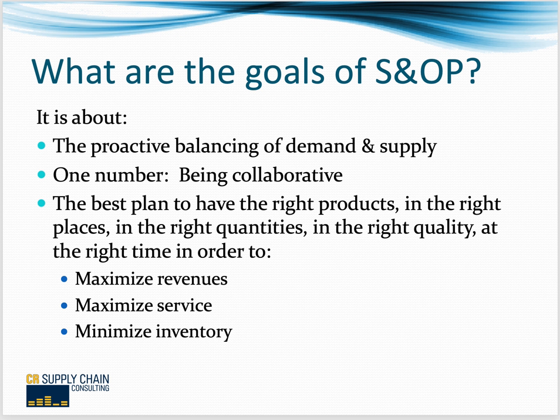What is sales and operations planning? What are the goals of S&OP? It's about the proactive balancing of demand and supply. Forecasting is trying to predict demand, and the supply function is trying to make the products you forecasted you're going to sell and have them in the right place at the right time. We're trying to get to one number — one business plan — which requires collaboration with sales, marketing, operations, general management, and finance and accounting.